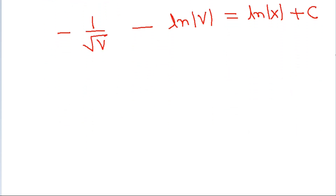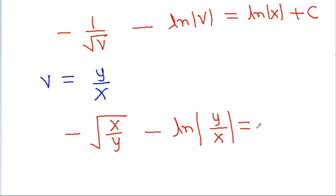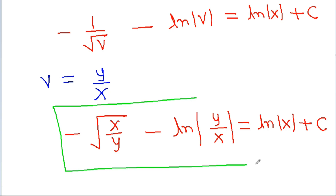Now back-substituting v = y/x, minus 1/√v becomes √(x/y), and ln|v| becomes ln|y/x|. So the final answer is: minus √(x/y) minus ln|y/x| equals ln|x| plus c.